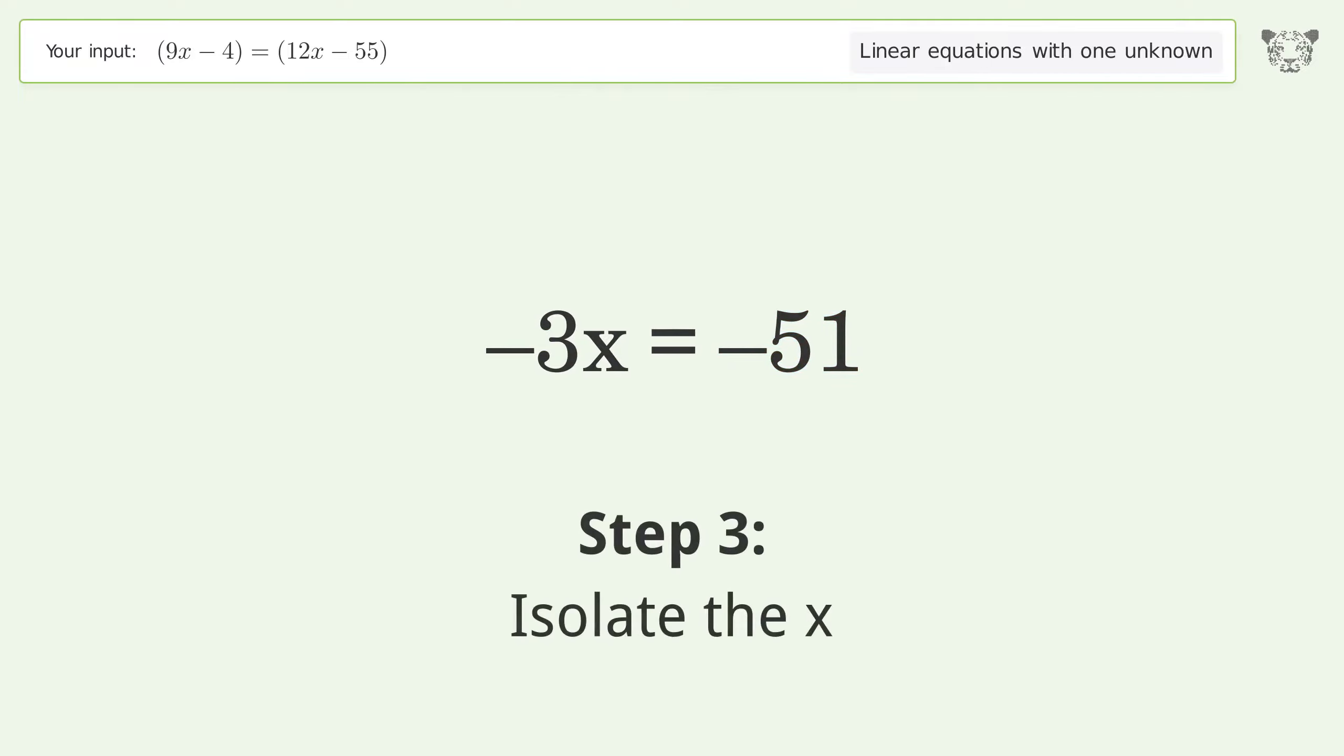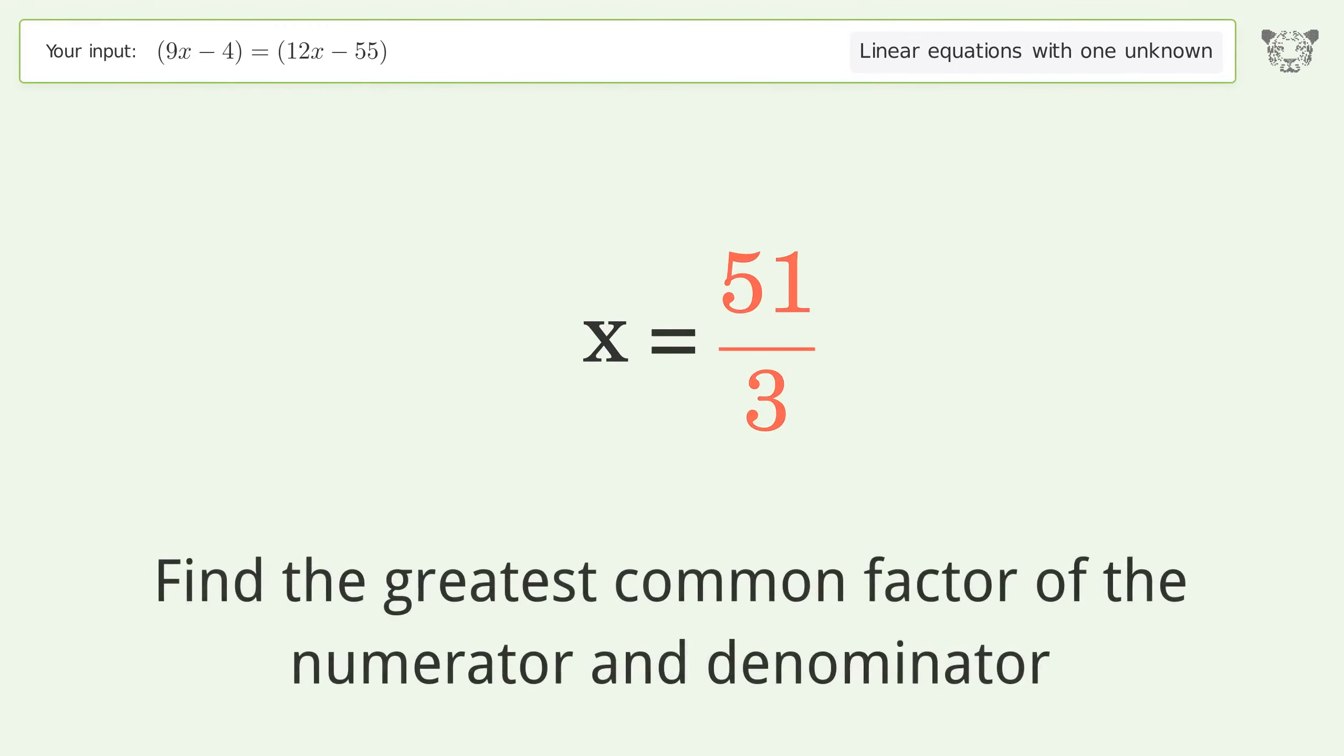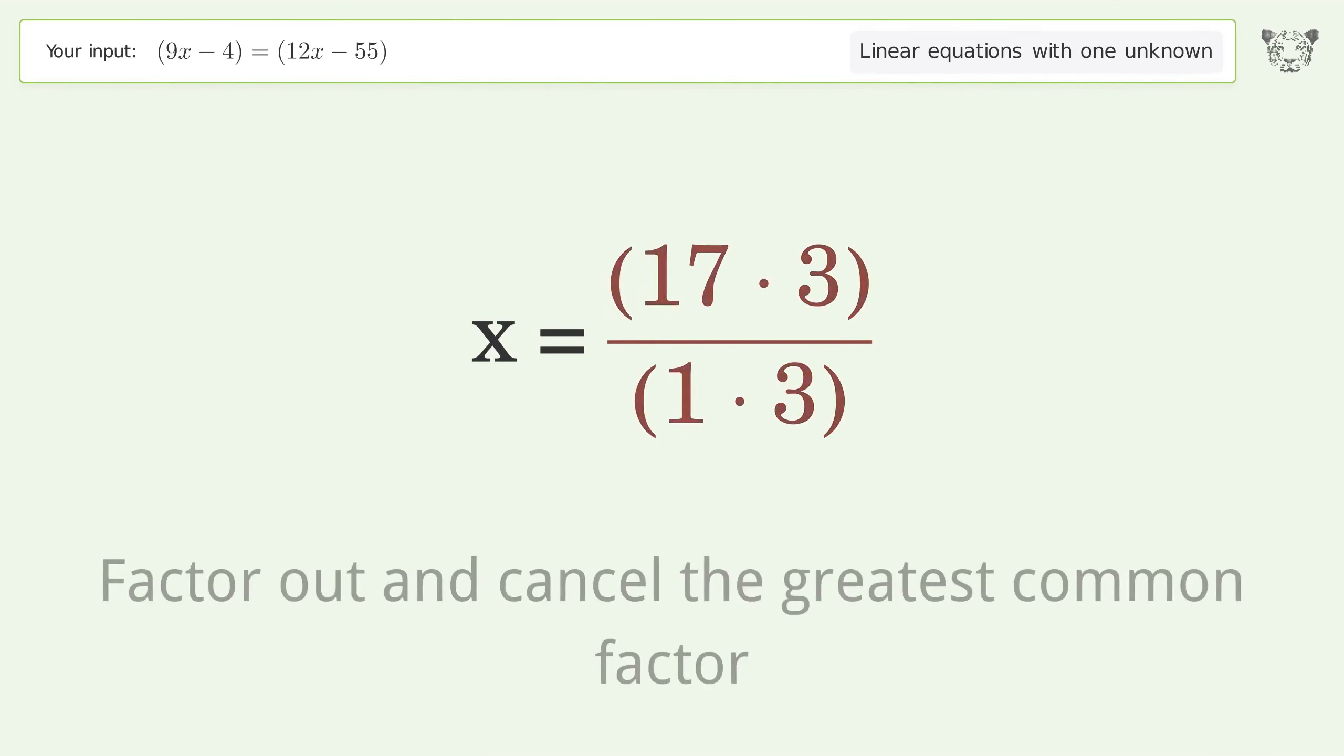Isolate the x. Divide both sides by negative 3. Cancel out the negatives. Simplify the fraction. Cancel out the negatives. Find the greatest common factor of the numerator and denominator. Factor out and cancel the greatest common factor.